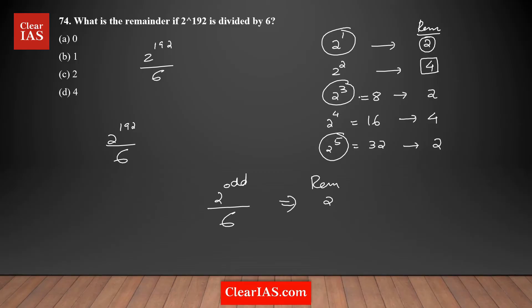If the exponent is an even number, when you divide by 6 the remainder is 4. That's the pattern. Now, 2 to the power 192 — 192 is an even number, so when you divide by 6 the remainder is 4. The answer is option D. The best way to solve this is to figure out a pattern and apply it to the question.